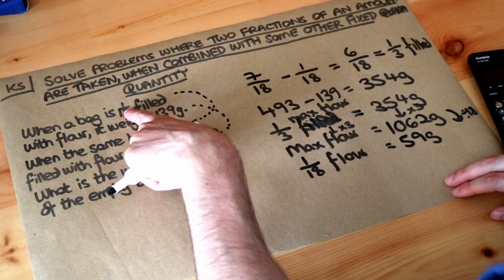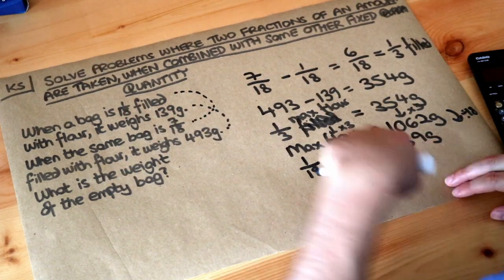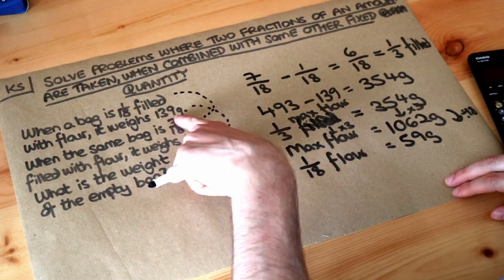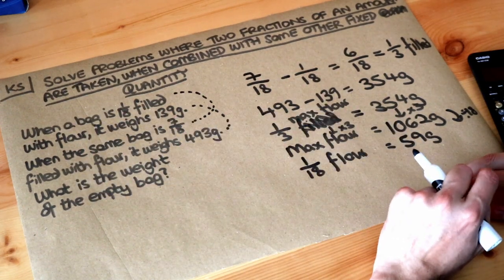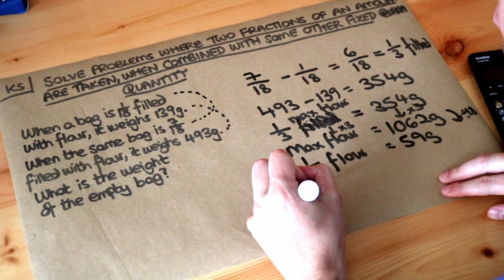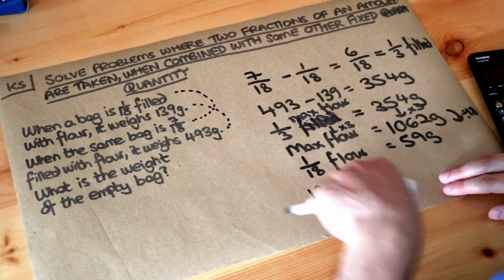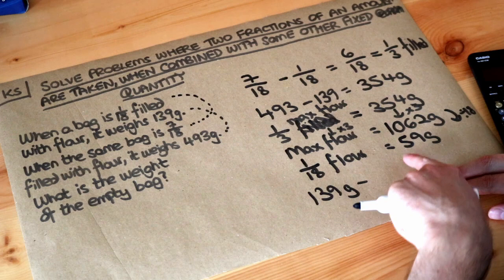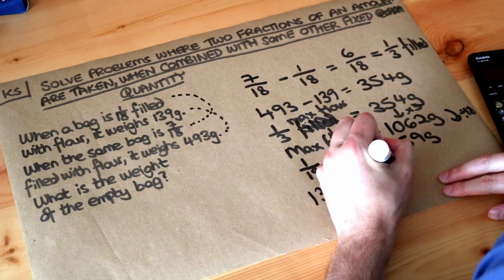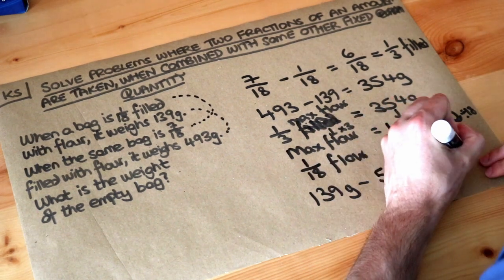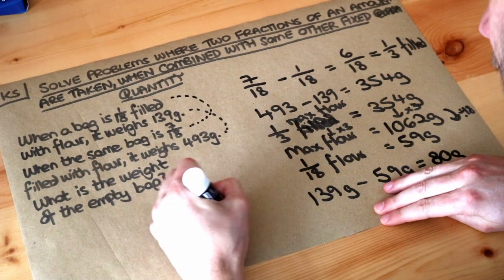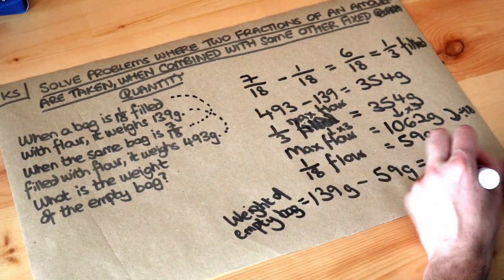And that means 1/18th of the flour which we know is 59 grams plus the weight of the empty bag comes to 139 grams. So at that point we just need to do 139 grams subtract the amount of flour we have when it's 1/18th filled, so 59 grams, and that gives you 80 grams. So that's the weight of the empty bag and that is the final answer.